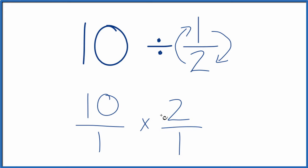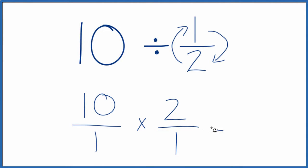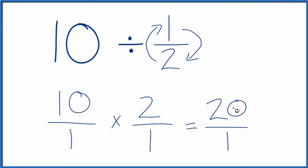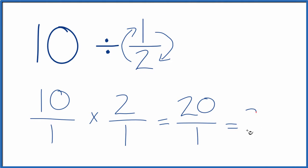And now when we're multiplying fractions, we just multiply the numerators and then the denominators. And that gives us our fraction. 10 times 2, that's 20. And 1 times 1, that's 1. So we have 20 over 1. And 20 divided by 1, that's just 20.